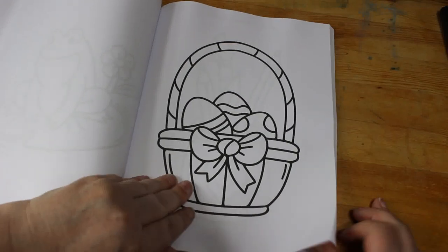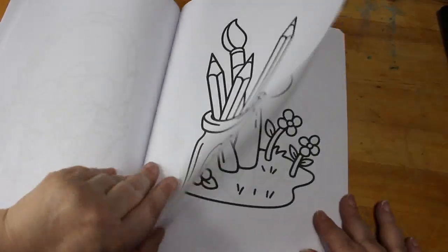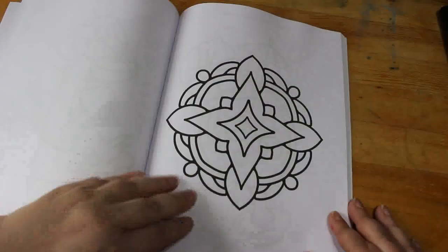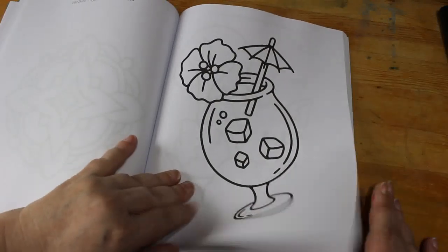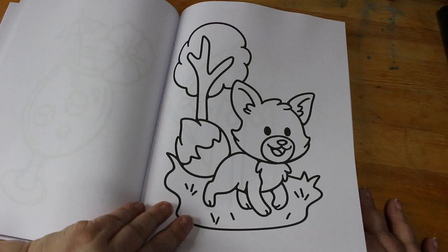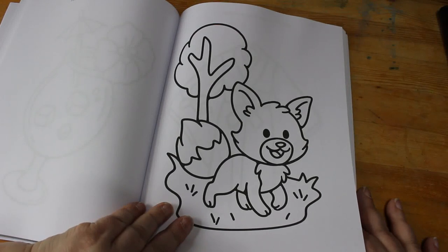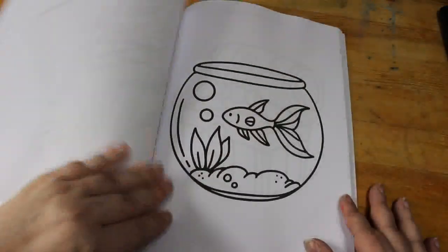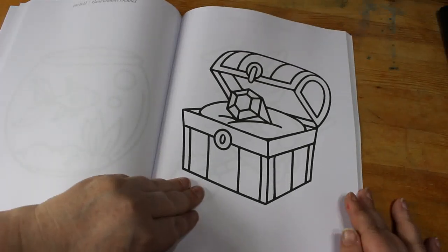Easter basket which is coming up this month. Jar of pens, very me. Easter basket, another mandala, a drink, a fox. I'm gonna say it's a fox, it's not dog, it's a fox. Kimono, that's beautiful. Fish in a bowl, a ring.